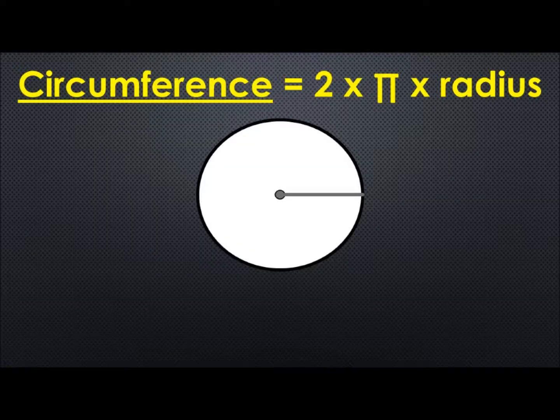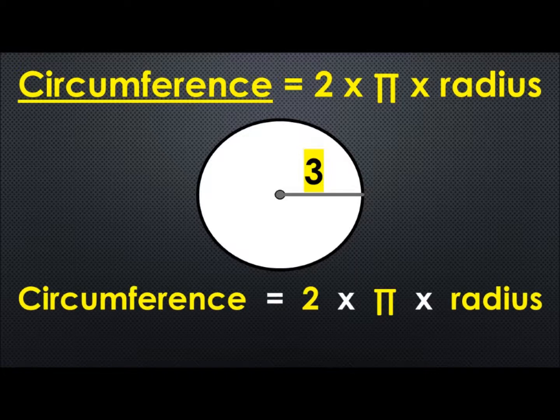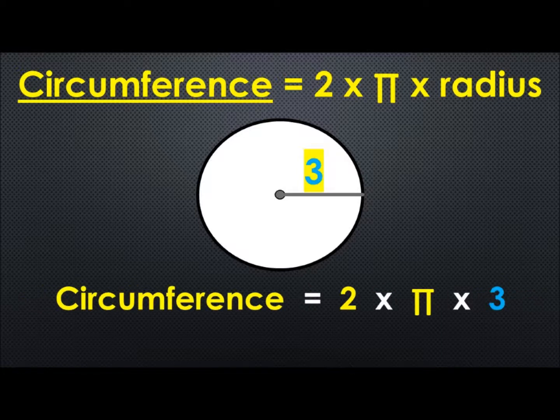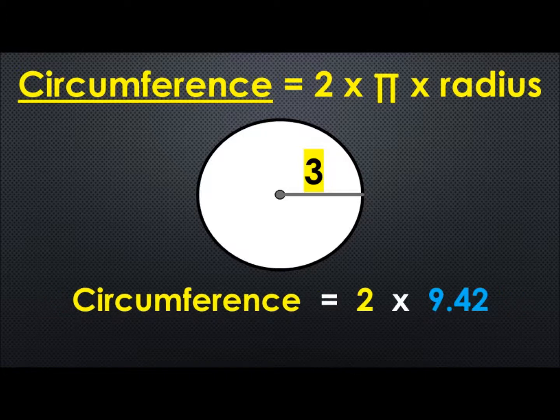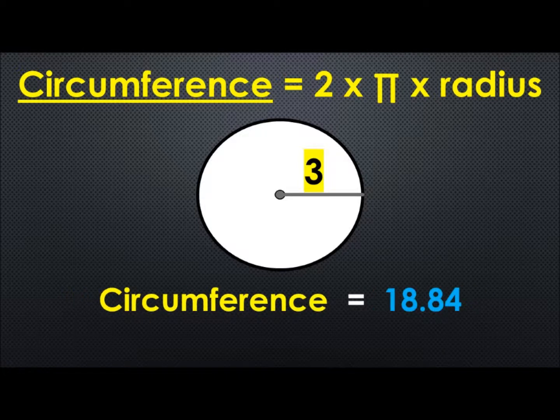Here's our first formula. Circumference is equal to 2 times pi times radius. Now let's make 3 be our radius and we're going to plug this in to show how the formula works. So we have 3 as the radius. Pi we have 3.14. We multiply 3.14 by 3, we get 9.42. We multiply that by 2, we get 18.84 units.